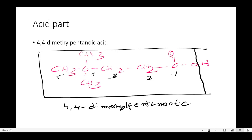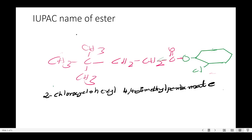All we have to do is combine these two names, so it will be 2-chlorocyclohexyl 4,4-dimethylpentanoate. In the future, if you see any ester, name properly the IUPAC name of the alkyl part from the alcohol and also the acid part, put 'oate' and combine the names. It's that simple, but you always mention the alcohol part first and then the acid part second.